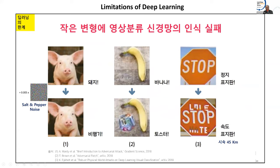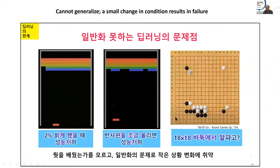Here are some failures: machine learning — deep learning — identifies a picture correctly, but add a little bit of noise and it says it's an airplane. A banana becomes a toaster. A stop sign is read as a speed sign saying 45 kilometers per hour. With a small data perturbation, it can do a miserable job. Also, it cannot be generalized — if you change brightness or the grid size, it cannot adjust and it becomes a whole new set of problems.